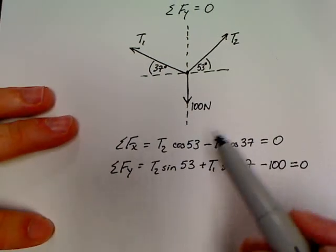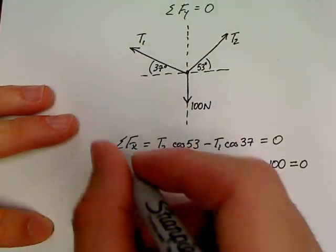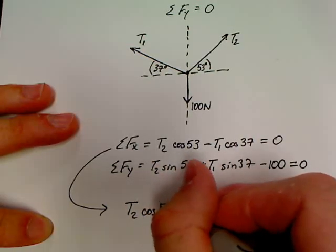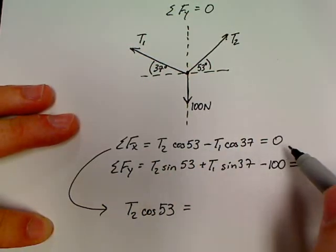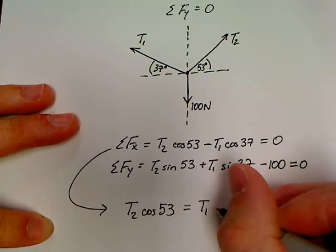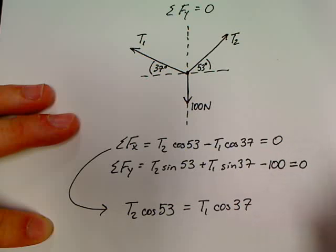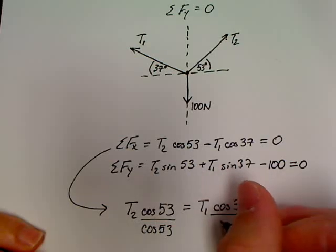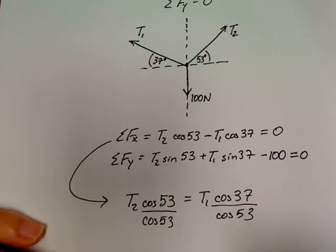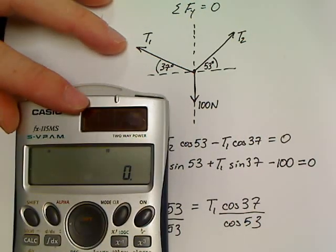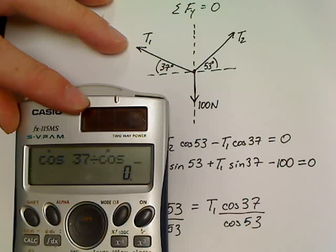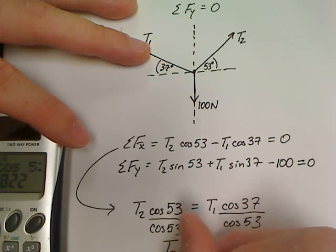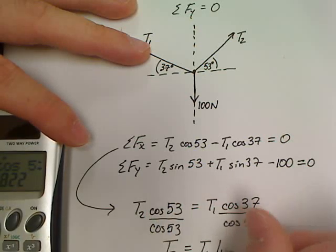So take a look at this. Take the simpler of the two equations, which is the first one, and let's solve it for T2. So T2 cosine of 53 would be equal to, add T1 to the other side, T1 cosine of 37. Now divide both sides by cosine of 53. And we'll plug that into our calculator. Cosine 37 divided by cosine of 53, 1.32. So T2 is equal to T1, 1.32.